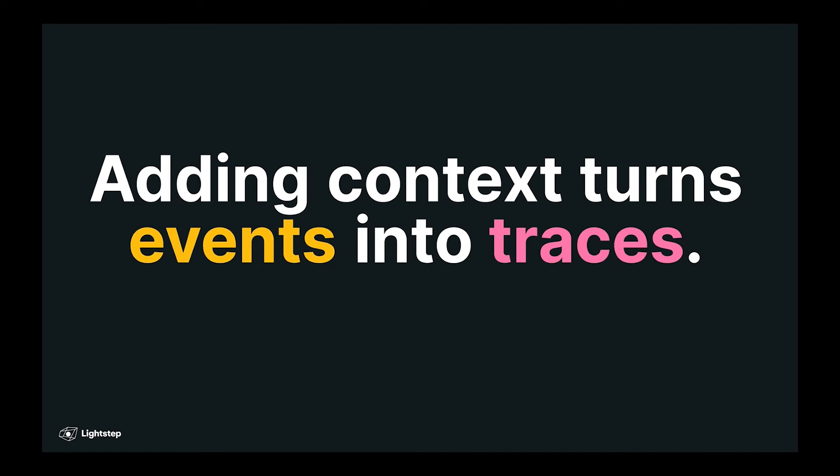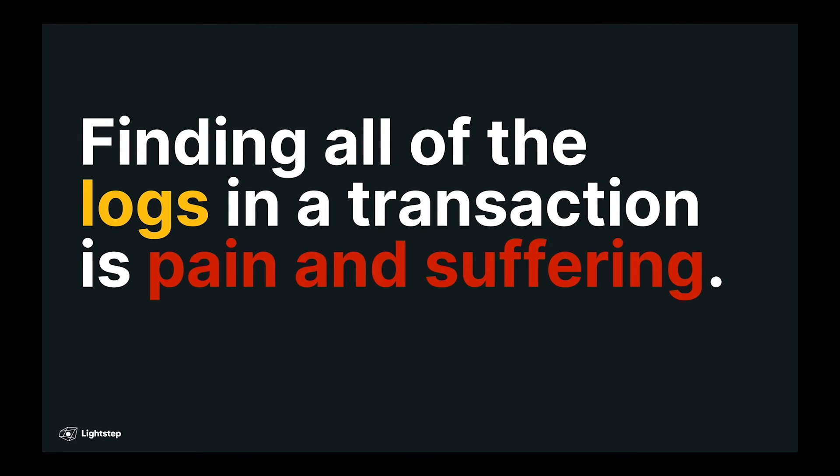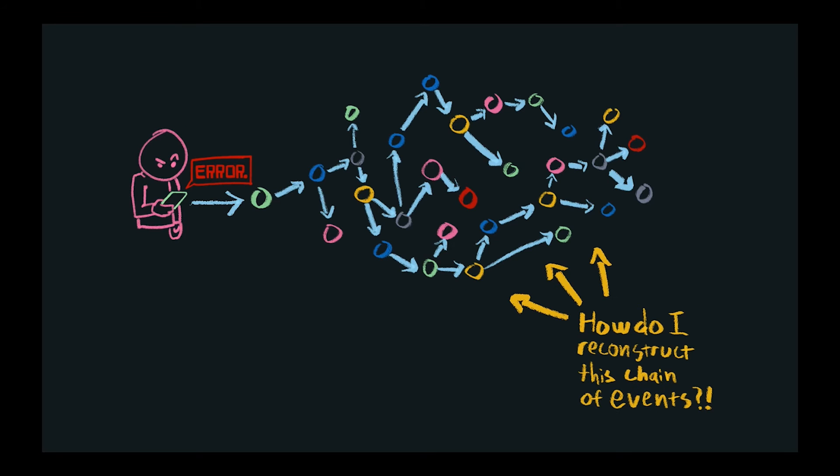So here's the thing. Adding all of this context to your events turns them into traces. Why is this important? It's important because finding your logs sucks. When you have a large distributed system with lots of concurrent operations occurring across lots of different machines, it can become really hard to find the logs that you want.